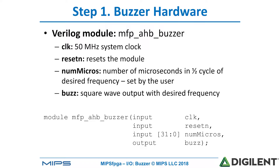The clock of the system is at 50 megahertz, and we're going to have an active-low reset input, reset_N. Num_micros is the number of microseconds in half of a cycle of the desired frequency, and this is the value that's set by the user using memory mapped I/O. The buzz output gives a square wave output with that desired frequency, as shown in the module declaration.